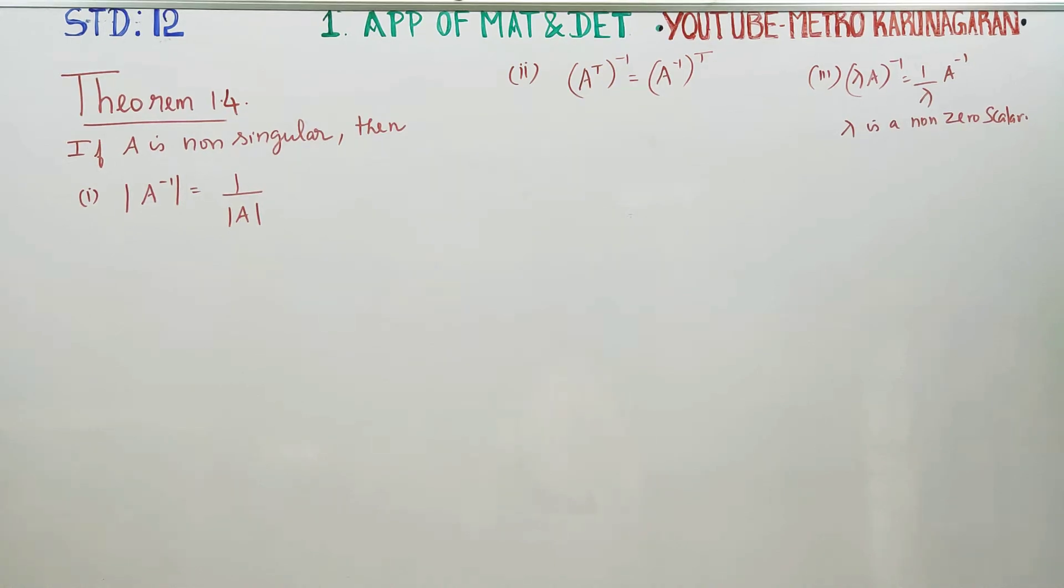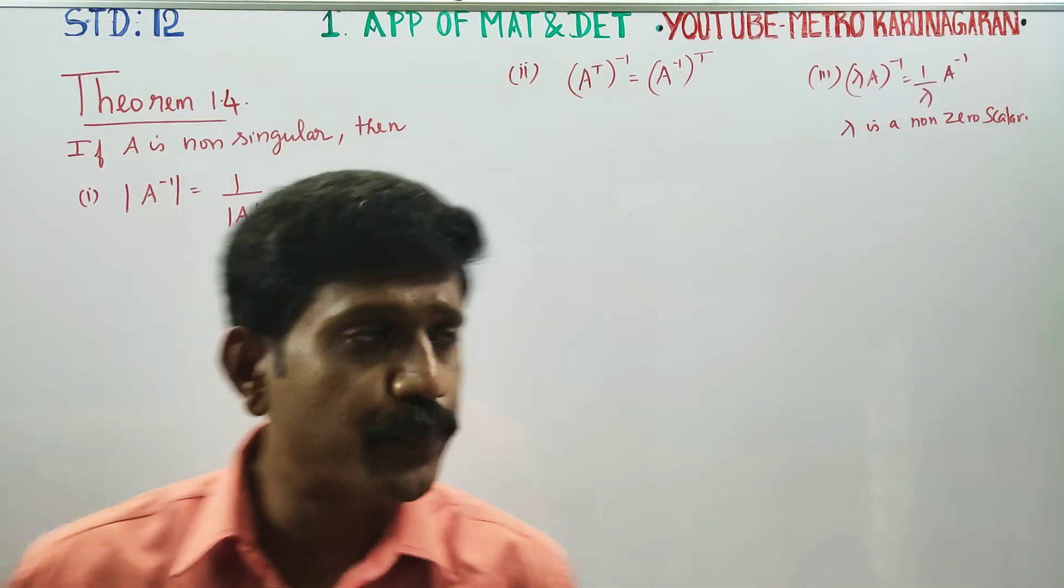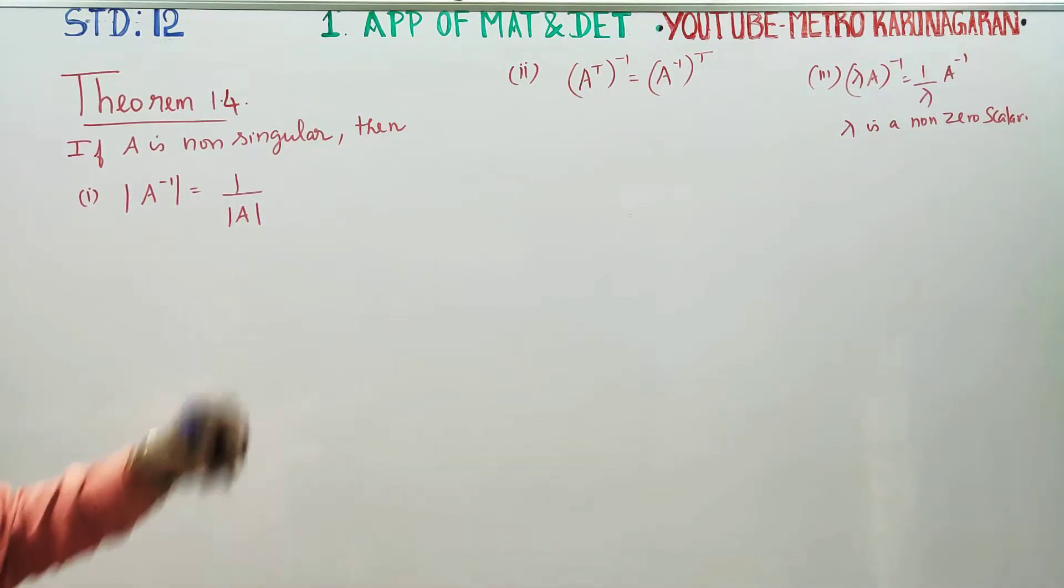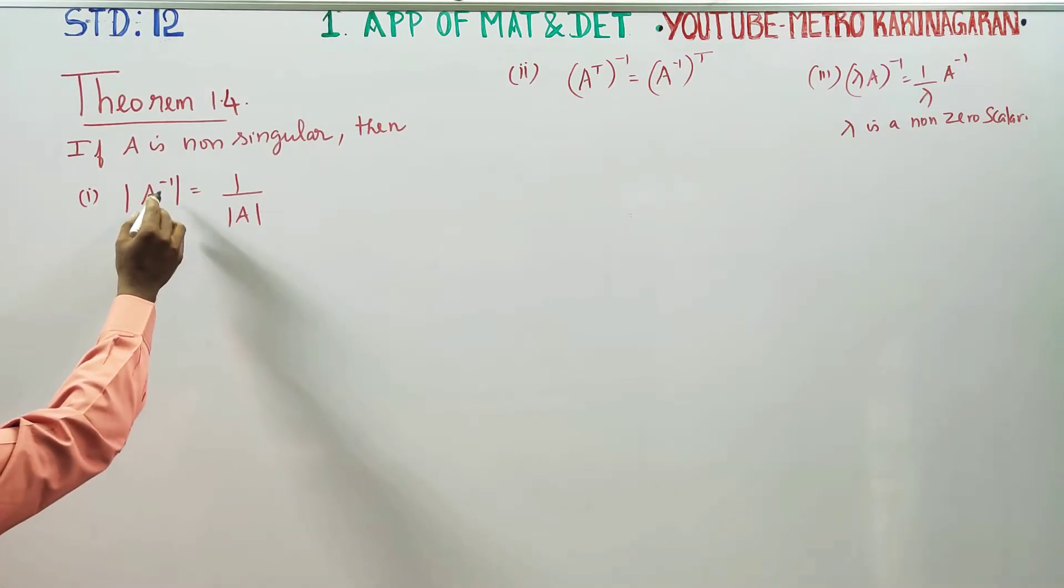Dear 12th standard students, I am Metru Karnagaran. In Theorem 1.4, we have to prove three different results. The first one is: determinant of A inverse is equal to 1 by determinant of A.